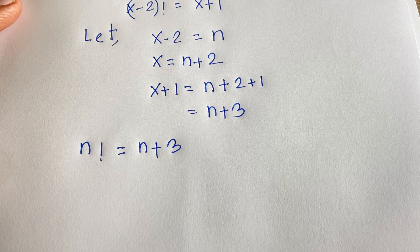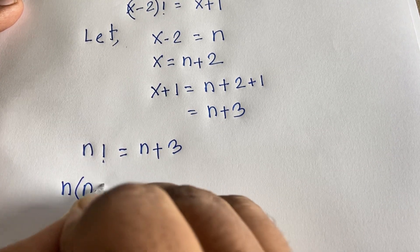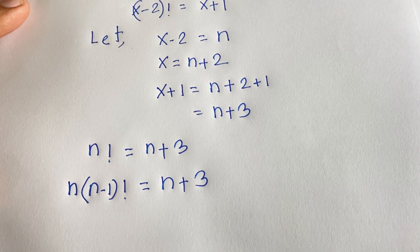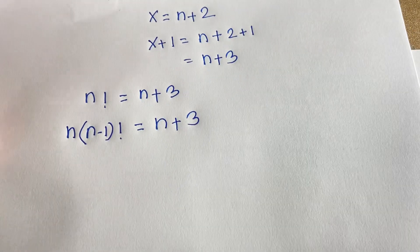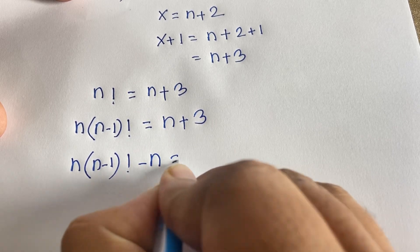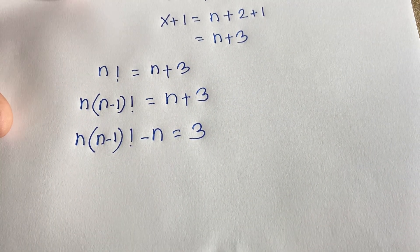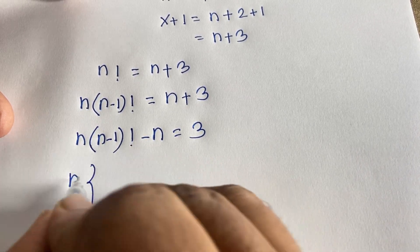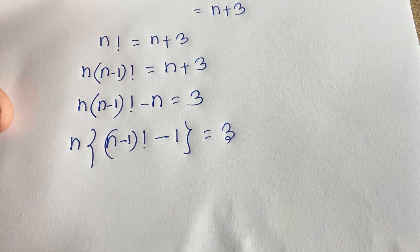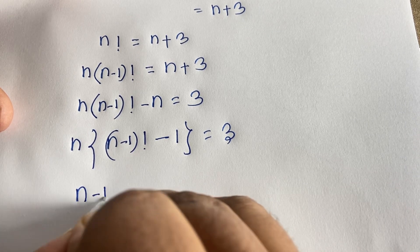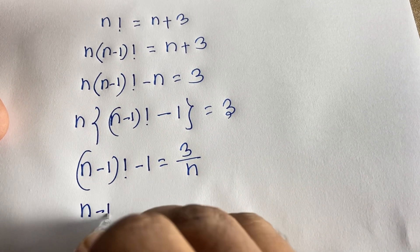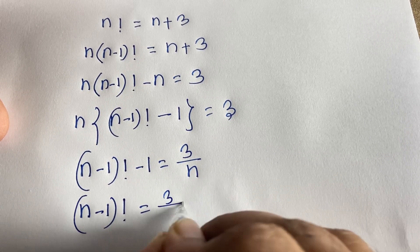Now at this moment, n factorial — I can say that it will be n times n minus 1 factorial — is equal to n plus 3. So I can say n times n minus 1 factorial minus n is equal to 3. I just move n to the other side. So n is common, giving us n times the quantity n minus 1 factorial minus 1, is equal to 3 over n. Then n minus 1 factorial is equal to 3 over n plus 1.